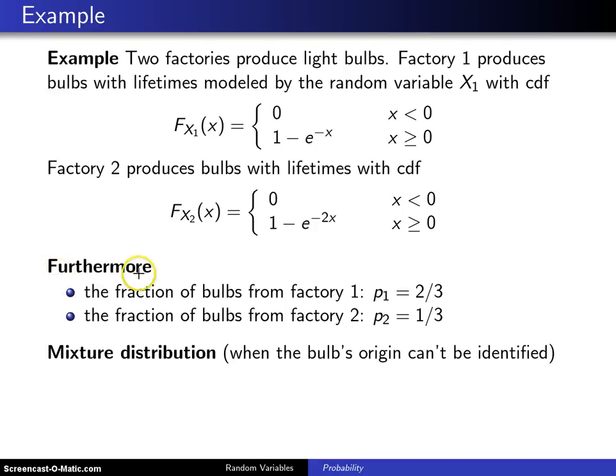Furthermore, let's say you know that the fraction of bulbs that come from factory one is two thirds and the fraction of bulbs that come from factory two is one third.